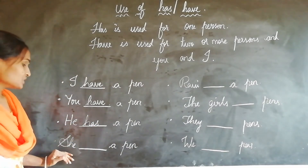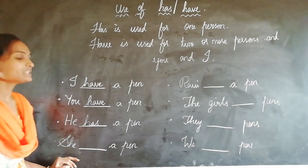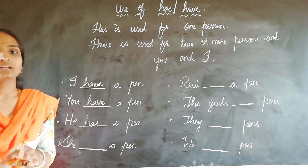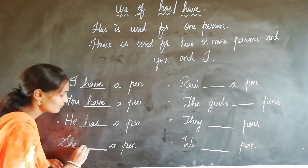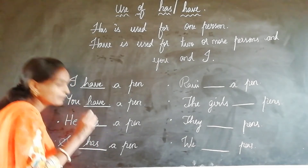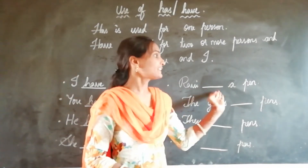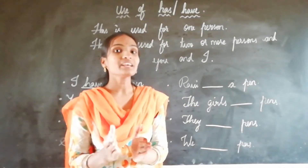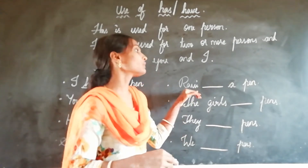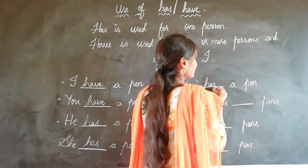Next: 'She dash a pen.' Here, 'she' is also a pronoun for a single person. So, she has a pen. Next: 'Ravi dash a pen.' Here, Ravi is also talking about one person. So, Ravi has a pen.